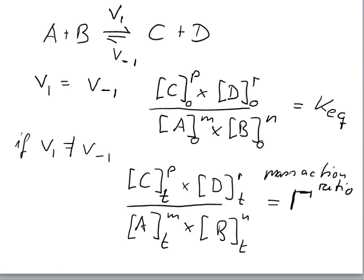We can find this mass action ratio by measuring the concentrations of C, D, A and B at a certain time point, and then compare this to the concentrations we would expect when we wait long enough for the reaction to establish its equilibrium.